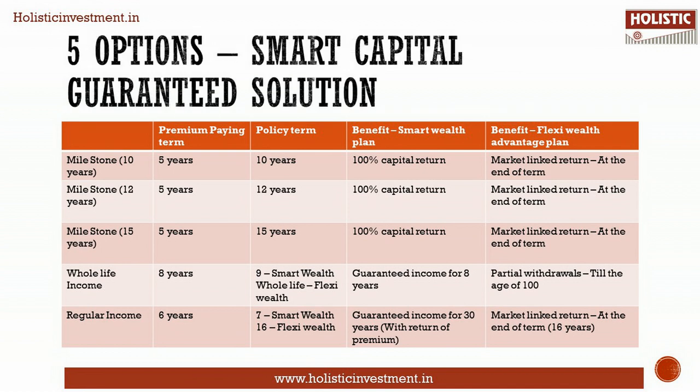There are five different combinations available to fulfill the various requirements of the investor. Under Milestone 10, the premium paying term is 5 years and the policy term is 10 years. The maturity benefit of Max Life Smart Wealth Plan is 100% capital return, and the maturity benefit of Max Life Flexi Wealth Advantage Plan is the fund value paid at the end of the policy term.